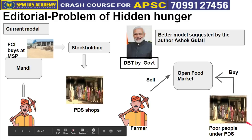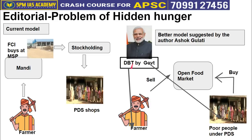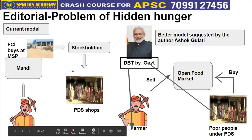For example, if wheat costs ₹70/kg in the market but previously cost ₹10/kg at a PDS shop, the differential amount of ₹60 would be directly transferred to the beneficiary's account by the government. Similarly, if a farmer previously sold rice at ₹50/kg at MSP but gets only ₹30/kg in the market, the government transfers ₹20/kg directly into the farmer's account. This way, all inefficiencies, corrupt practices, and wastage can be countered using this market model.